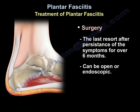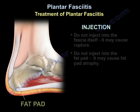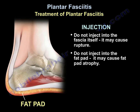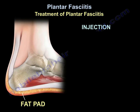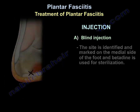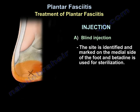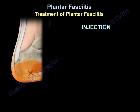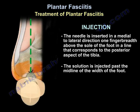Regarding injection: do not inject into the fascia itself, as it may cause rupture of the plantar fascia. Do not inject into the fat pad, as it may cause fat pad atrophy. As a blind injection, the site is identified and marked on the medial side of the foot and betadine is used for sterilization. The needle is inserted in a medial to lateral direction, one finger breadth above the sole of the foot in a line that corresponds to the posterior aspect of the tibia. The solution is injected past the midline of the width of the foot.